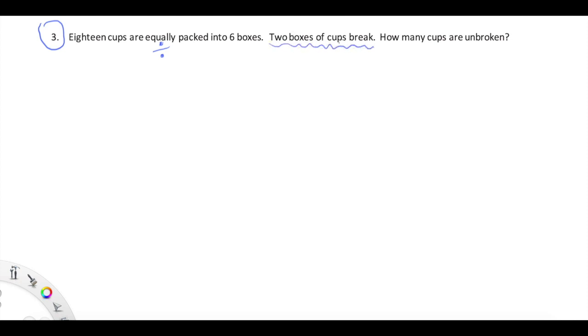Okay, so here's where that two-step problem solving comes in. We're being told that two boxes of the cups break, but we're not being asked how many cups break. The final question that we're being asked here is how many cups are unbroken? So please pay special attention to the fact that the final answer that we need to give is showing how many cups are unbroken.